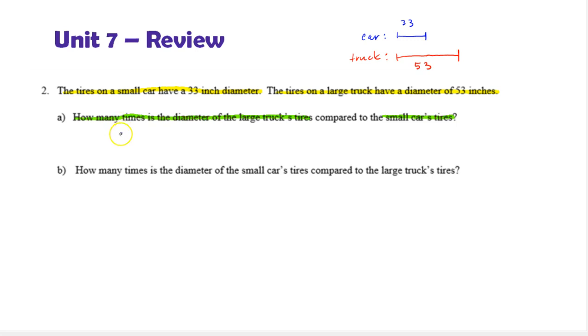So again, to find this value, notice here we're finding, compared to the small car's, there'd be at least one copy of the small car's and the truck's, and then a little bit more. So we're going to write this as the ratio of large diameter for the truck, and the small diameter for the car. And this is 53 inches over 33 inches. The inches cancel, and we just write this as the ratio, 53 over 33.